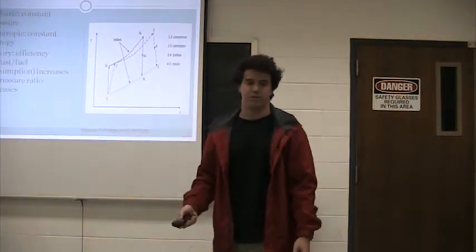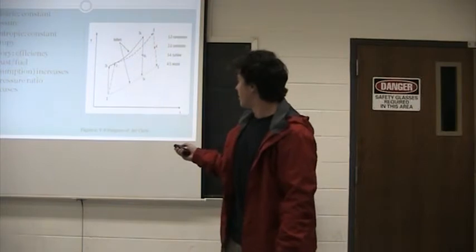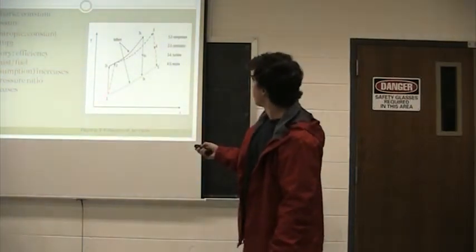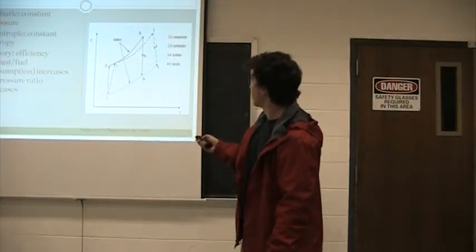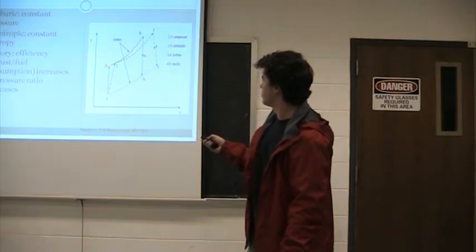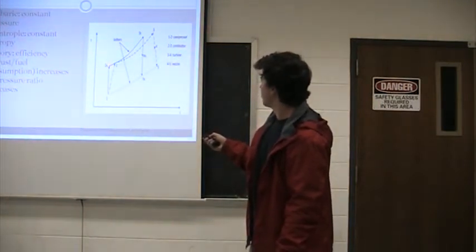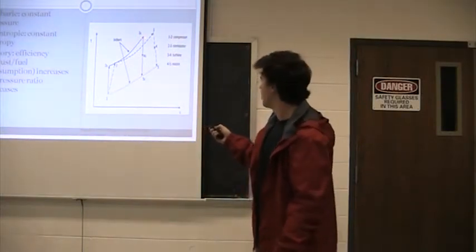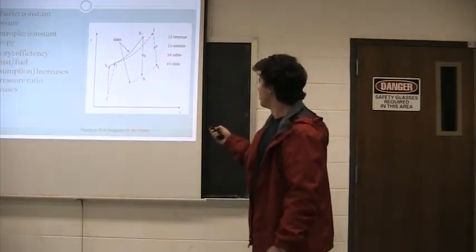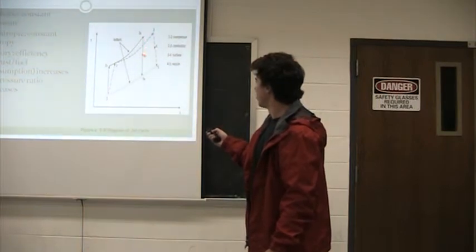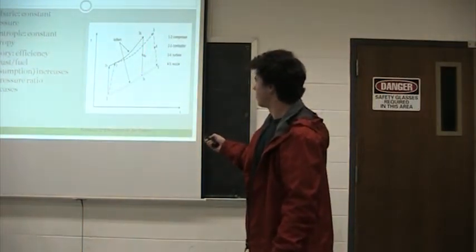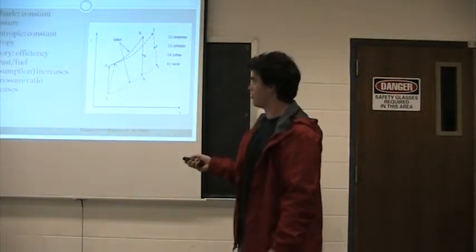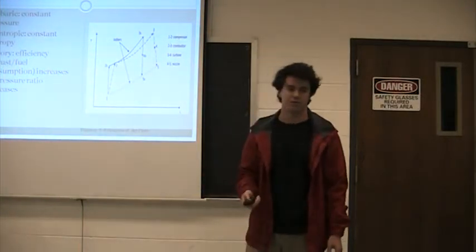The actual Brayton cycle for this, right here we have from the compressor, we have gas on the compressor, and this is our isentropic process. Then we have an isobaric process whenever it goes through the combustor and heat is added to the system after igniting. Then we have the gas coming back through the turbine, expanding, and it being ejected through the nozzle. The overall theory is that our efficiency will increase as the pressure ratio increases.